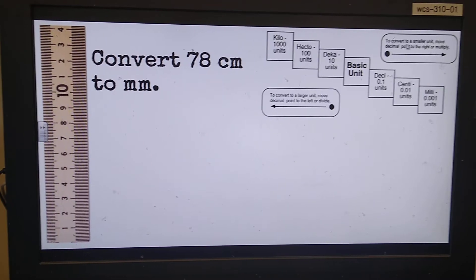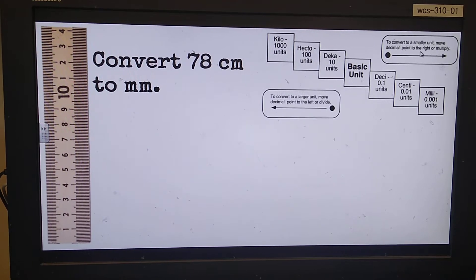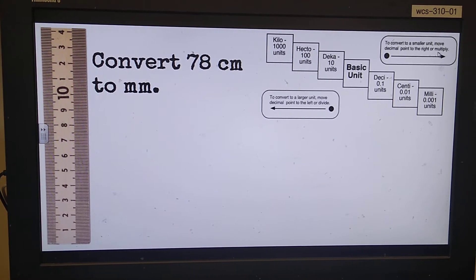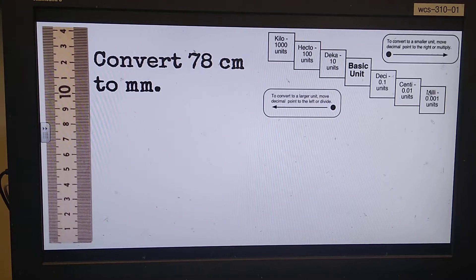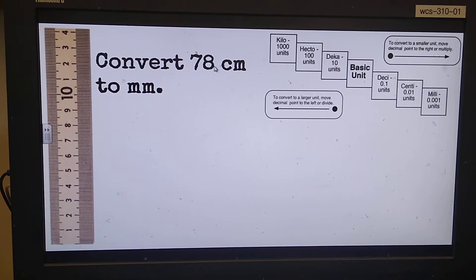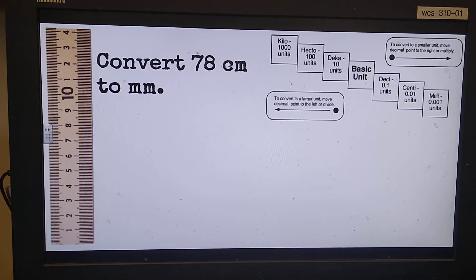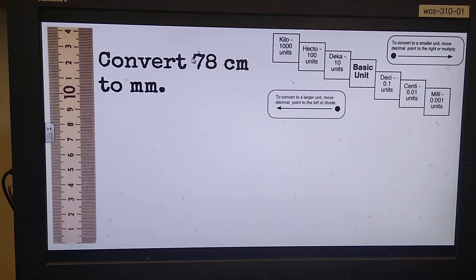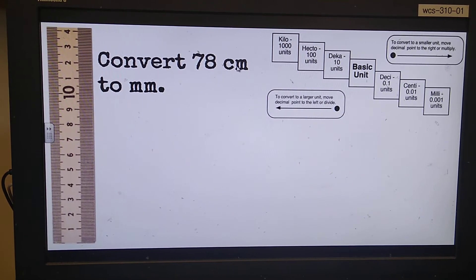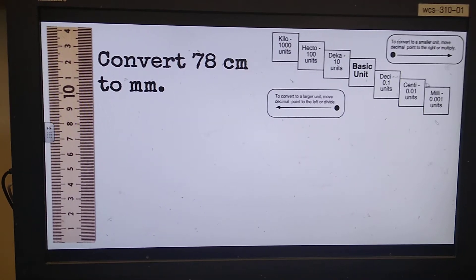And it says convert to a small unit, move decimal point to the right or multiply by 10. We'll forget multiplying; we'll just move it to the right. So here we go: 78, move the decimal place one over, fill it with a zero—we would have 780 millimeters. That's all it is.